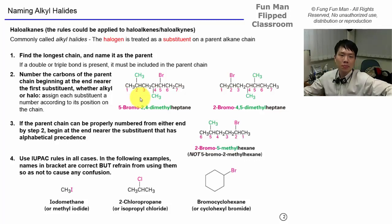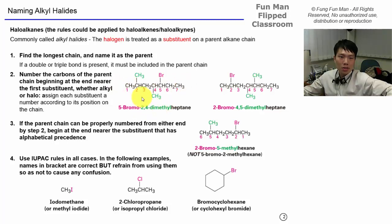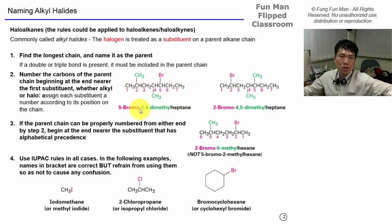This molecule is named 5-bromo-2,4-dimethylheptene because the longest chain contains seven carbons. The numbers must give the smallest set, so coming from the left gives positions 2, 4, 5; coming from the right gives 3, 4, 6. Since 2 beats 3, we come from the left. Also, since B comes before M alphabetically, the answer is 5-bromo-2,4-dimethylheptene.